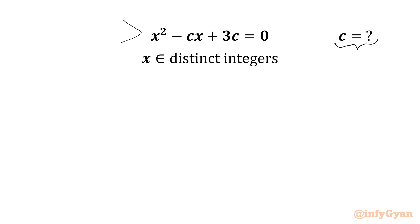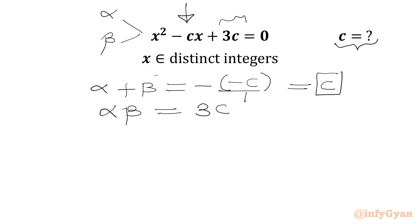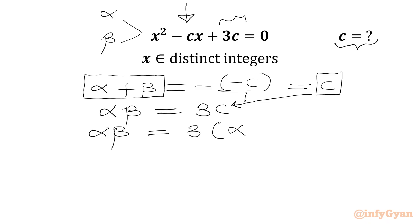I will assume the roots of this quadratic equation are alpha and beta. Using Vieta's formulas, we can write the sum of roots and product of roots in terms of C. The sum of roots equals negative of minus C over 1, which gives us C. The product of roots is the constant over the leading coefficient, so alpha times beta equals 3C. Since C equals alpha plus beta, we can write alpha times beta equals 3 times (alpha plus beta).